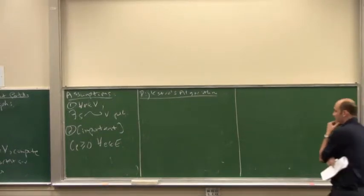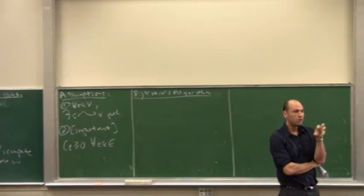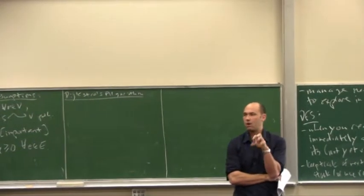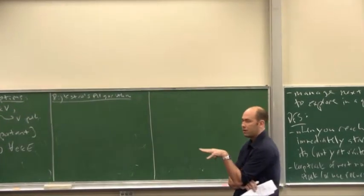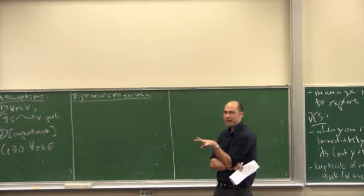And the invariant we're going to maintain is everything that we've sort of captured or covered so far, we will have correctly computed what shortest paths are in that region. And then eventually when we've covered the entire graph, inductively we'll have computed shortest paths to everything.